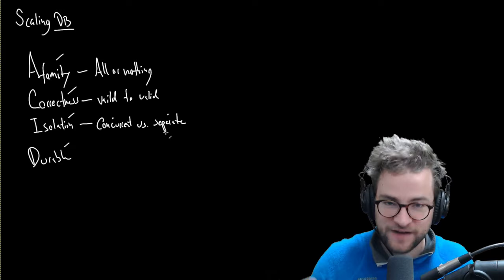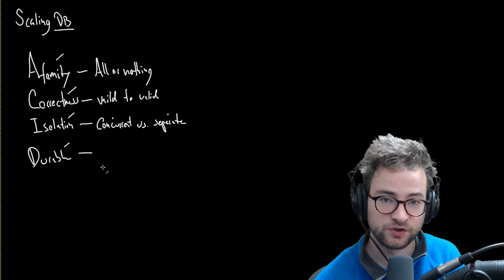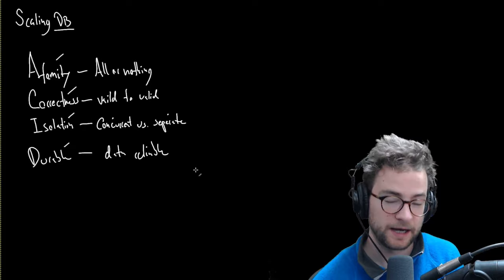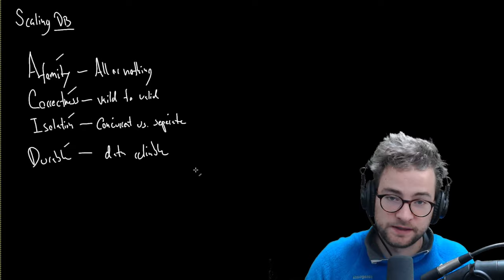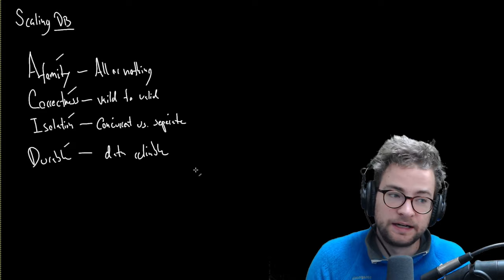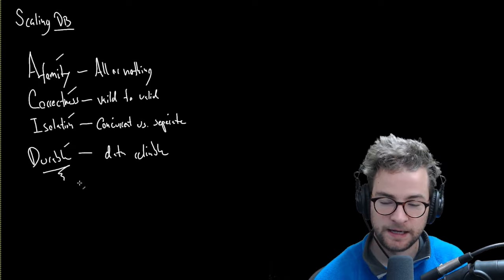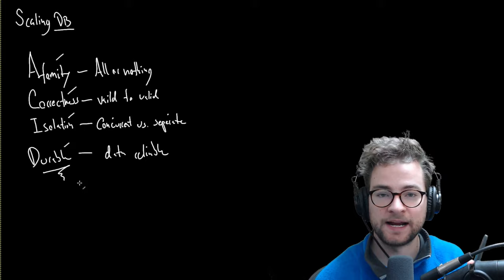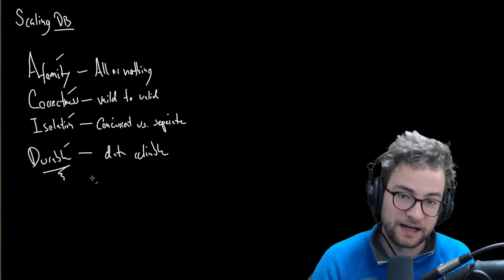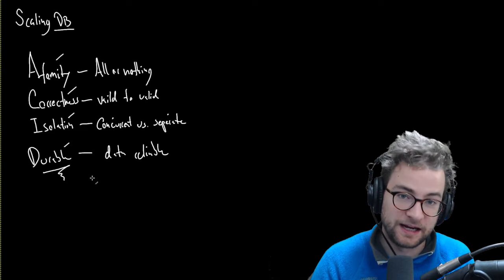Finally — and spoiler alert, this is the one I believe to be the most important — is durability. Data should be reliable and database systems should be reliable. We shouldn't be in an instance where we lose data, a database crashes, and all of a sudden we've lost a bunch of user data and our business is done. I really do think durability is the number one thing, especially in system design interviews, that you should target.